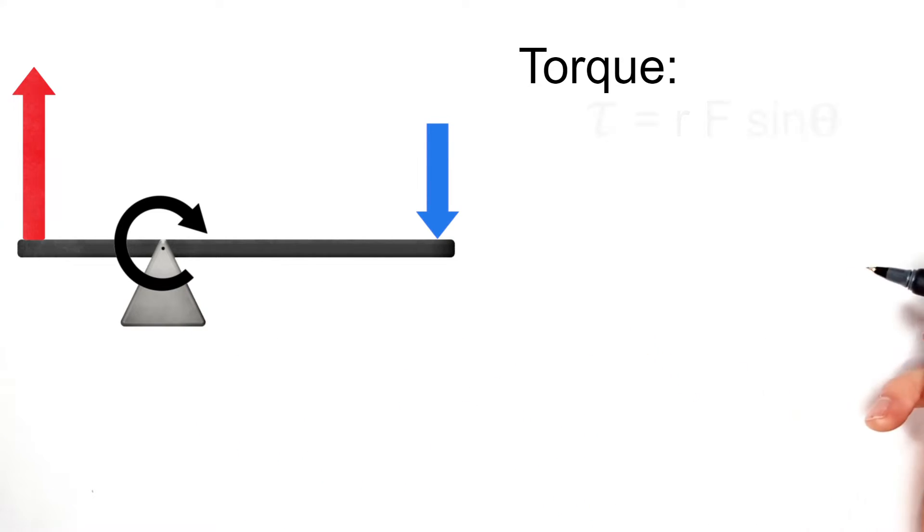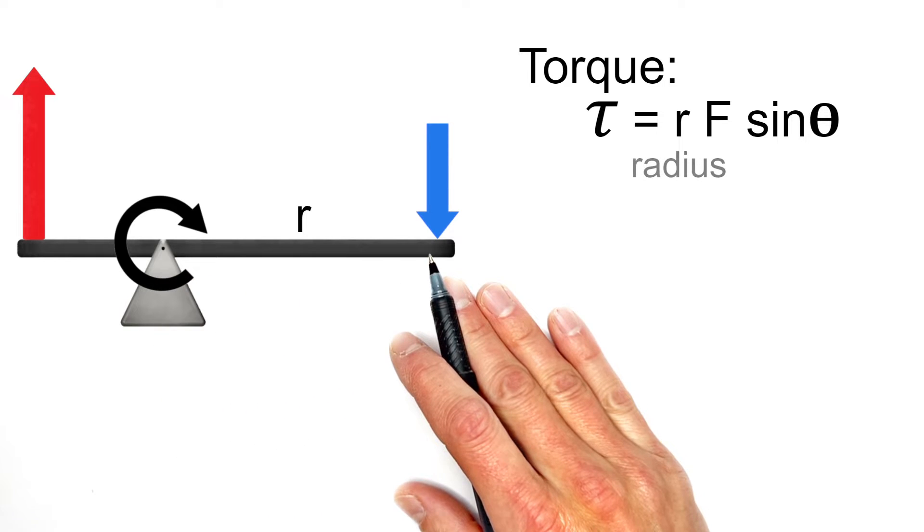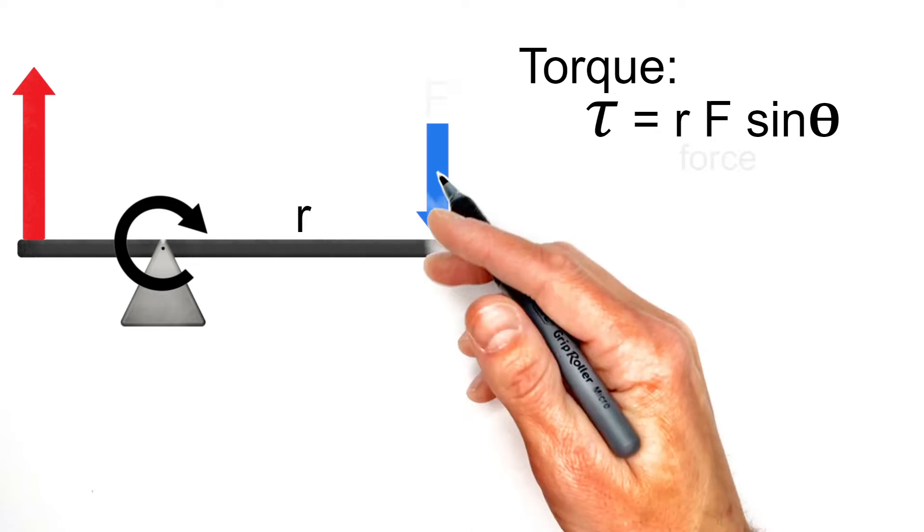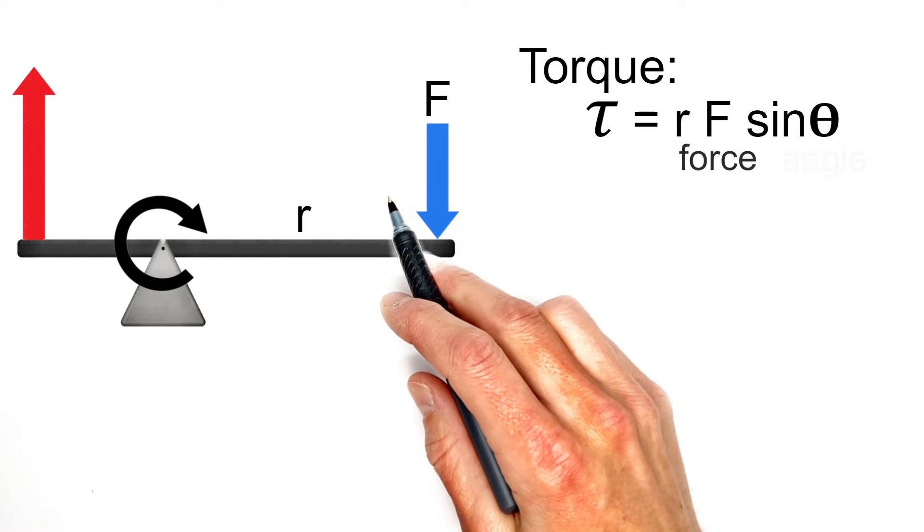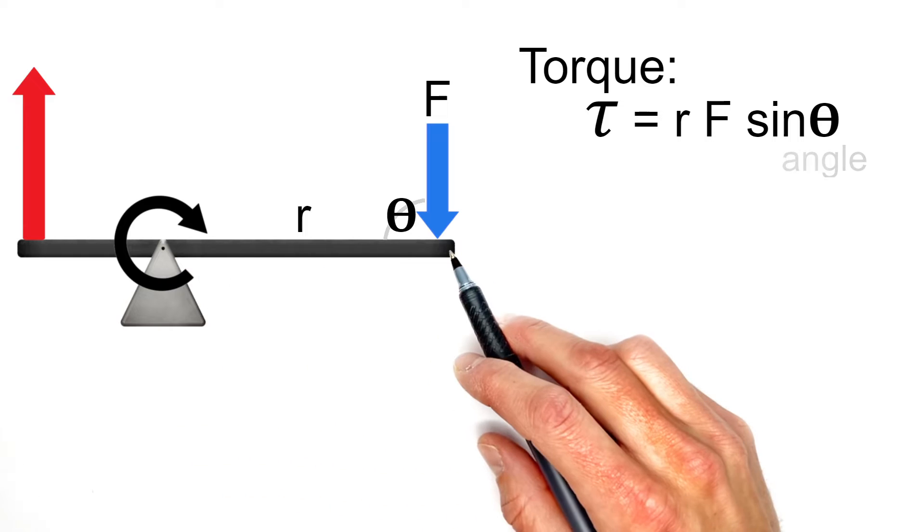Now torque is given by the equation Rf sine theta, where R is the distance from the pivot point to the force—this is what most people refer to as leverage. F is the force, and theta is the angle between the force and the radius vector.